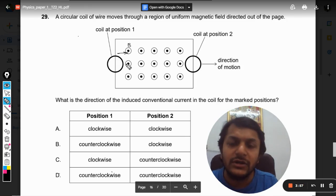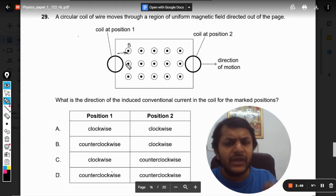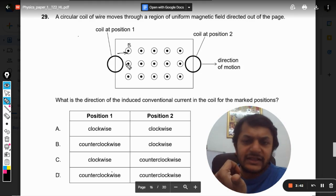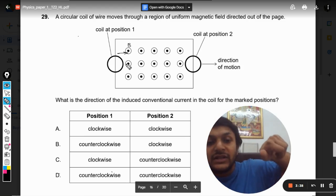...should be into the board, opposite to the flux that has increased. Now the flux has increased, that is why we want to reduce it. So if you're using a right hand rule, we can say that my thumb should be pointing towards the screen, so the current will be clockwise.